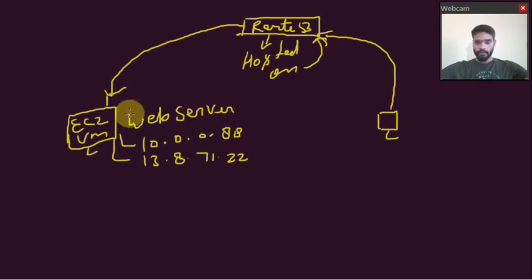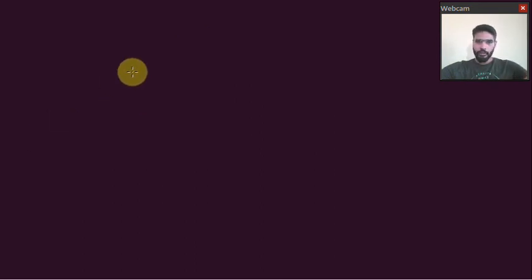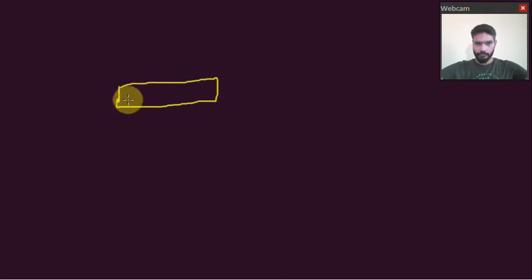But what if this single server is not capable of handling all traffic — not going to serve requests in a better manner? We need fault tolerance, disaster recovery, or failover for this server. To manage that, we will have a load balancer here — one Elastic Load Balancer.